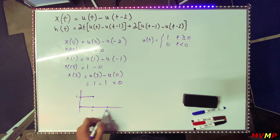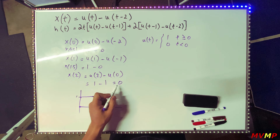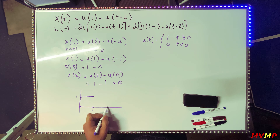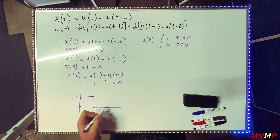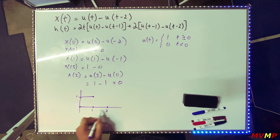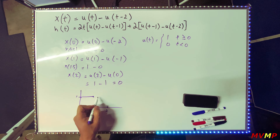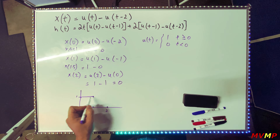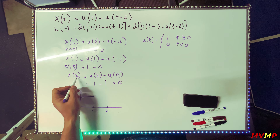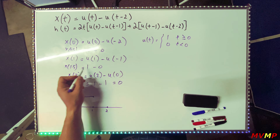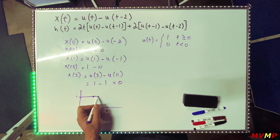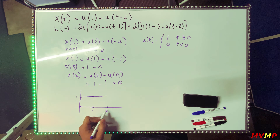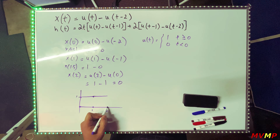At two we have zero. To confirm the shape between one and two isn't sloped, plug in 1.5 — the answer is also one — so it's a flat line, and then drops to zero at t = 2.